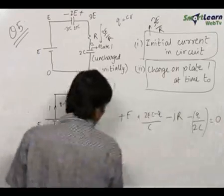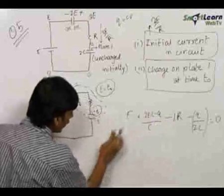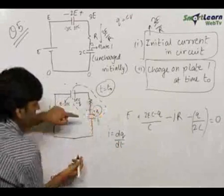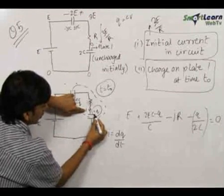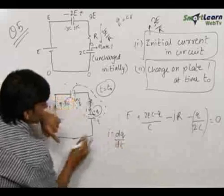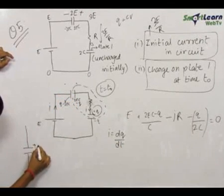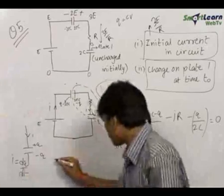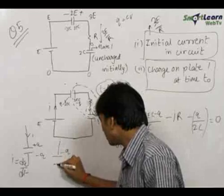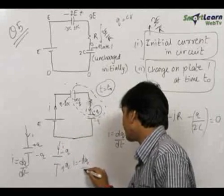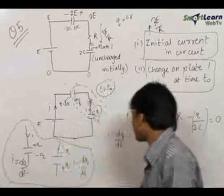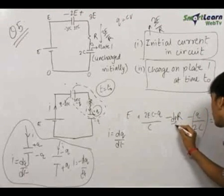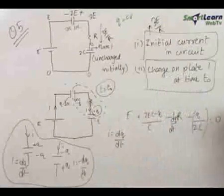Now we have an equation in i and q. We know that i equals dq/dt, since the current is directly responsible for accumulating charge on this plate. Always remember: whenever this plate has plus q and minus q and you assume current in this direction, i equals dq/dt. If you assume the opposite — minus q and plus q with current in the other direction — then i equals minus dq/dt. Be careful of how you assume things. Here i equals dq/dt.